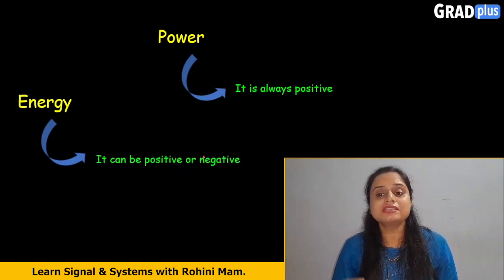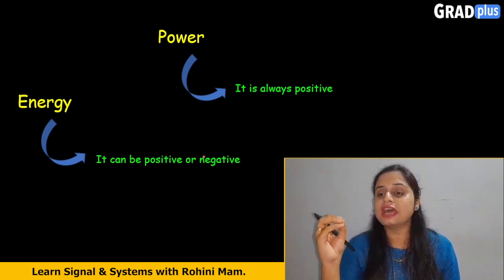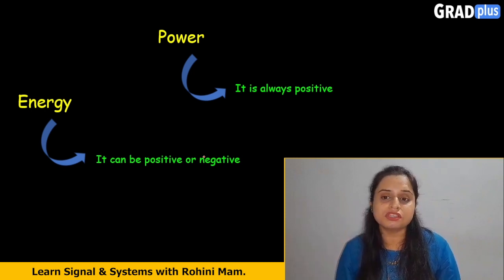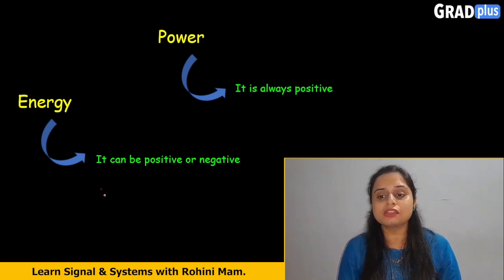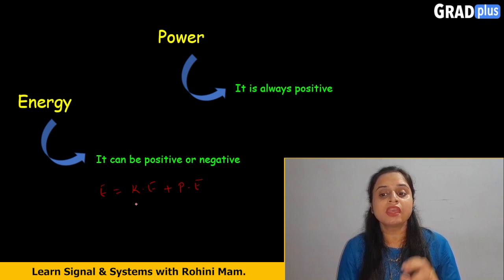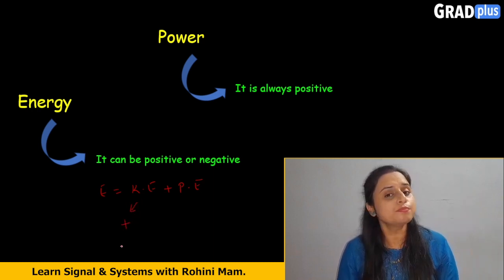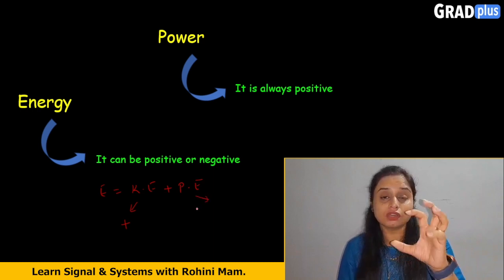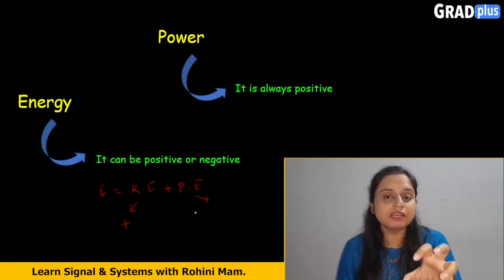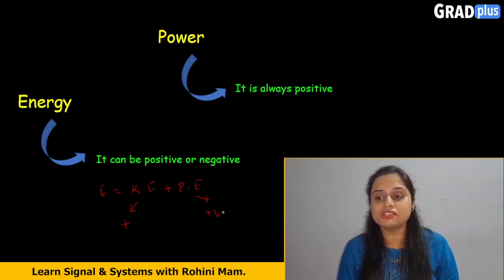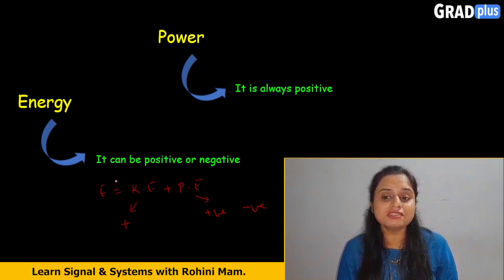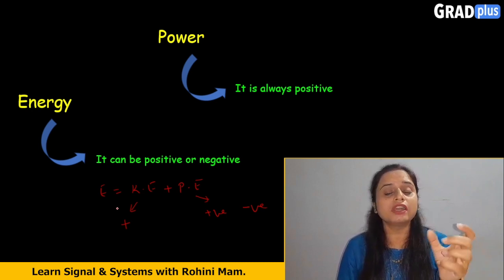The next difference: energy is positive or negative, and power is always positive. Why can energy be positive or negative? Energy is nothing but the combination of kinetic energy plus potential energy. Kinetic energy is always related to your mass, so it is always positive, but potential energy is related to gravity, so it can be positive or negative.